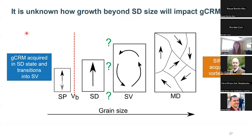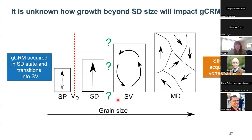First, looking at growing beyond single domain size: in the natural samples, the CRM is originally acquired as particles grow through the blocking volume. But if they continue growing, they'll grow into a vortex state, and we don't yet know how that transition affects the CRM — especially given that a lot of these authigenic magnetic minerals form quite equidimensional grains. The hard axis of the single vortex state in that unstable zone might be quite important. This is a different process than what I've modelled, which only looks at single domain size. The SIRM in the natural samples is acquired at full size in a vortex state, which is also a different process — so it's not yet known how this will affect the CRM to SIRM ratio, but it is likely to have an effect.